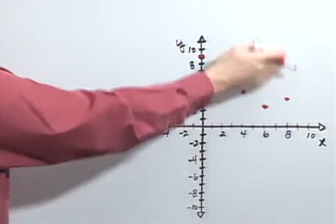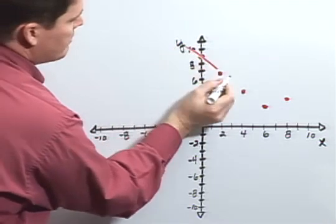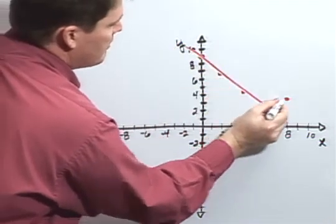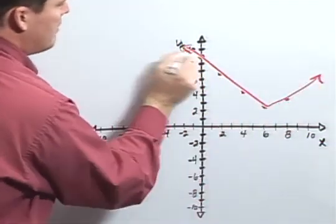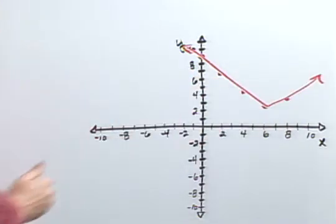And if we chose 10, you'd see it'd be coming back up. So when I graph this, I get the absolute value, the graph that results.